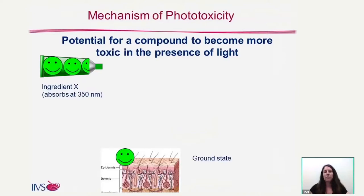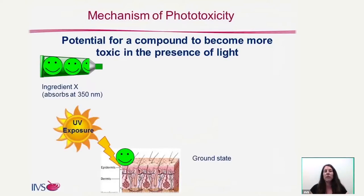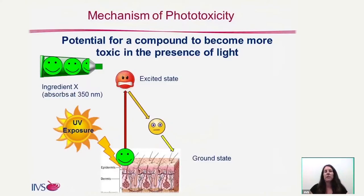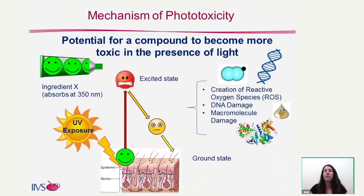At the ground state, the compound is fine as is, but then when we go outside in the sun and are exposed to the UV, this particular compound gets excited. And during this process of excitement and going back down to our ground state, we have the creation of reactive oxygen species, or ROS. We can also have some DNA damage from thymine dimers, and these reactive oxygen species can also wreak havoc on our macromolecules like lipids or proteins.